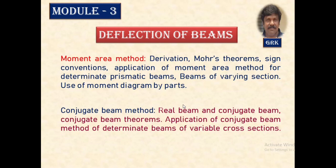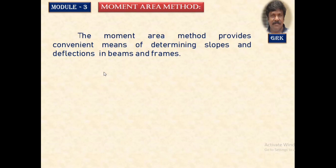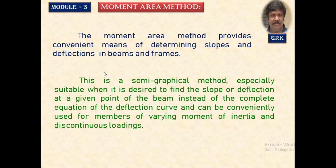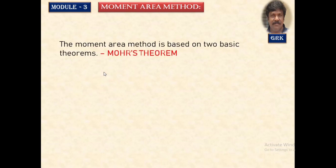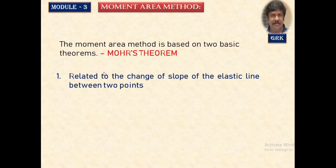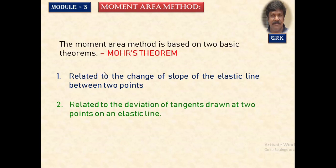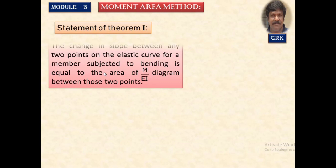In this session, we will discuss the moment area method. Let us understand how to calculate slopes and deflection for beams of the same section or of varying section, and for frames, using a semi-graphical method developed by Mohr. He developed two theorems to calculate the change of slope between two points and the deflection with respect to the elastic line. Let us study these two theorems.